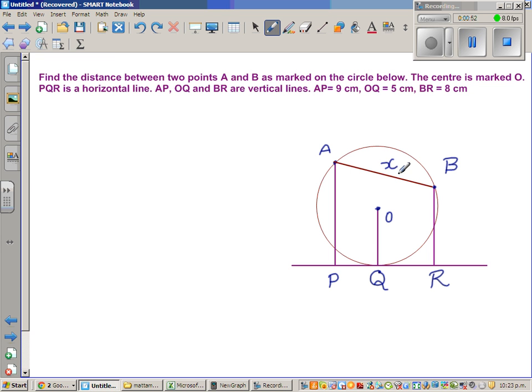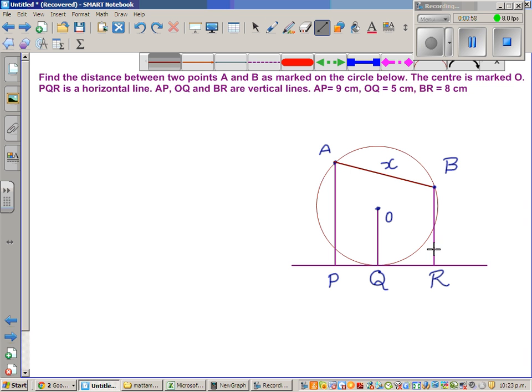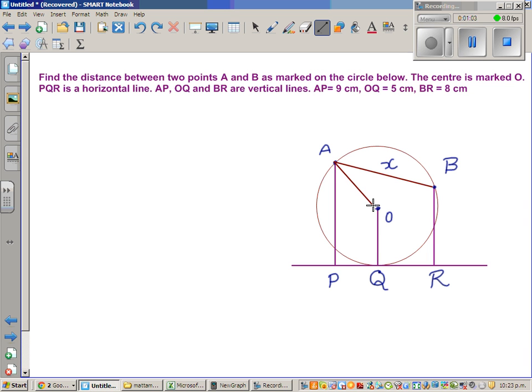Using that information, what can we do? We know that the radius is 5, so if OQ is a radius, OA is also a radius, OB is also a radius. We know OQ is 5, so OA is also 5 and OB is also 5.